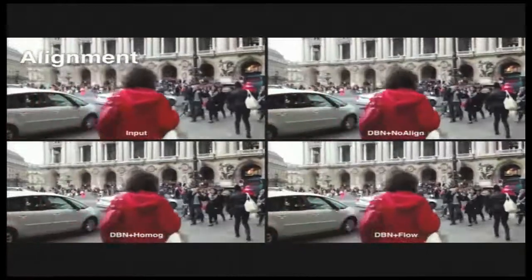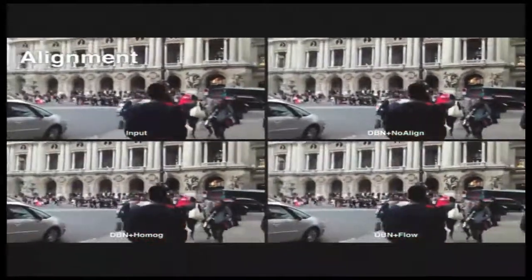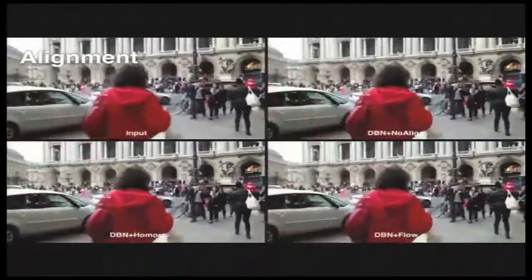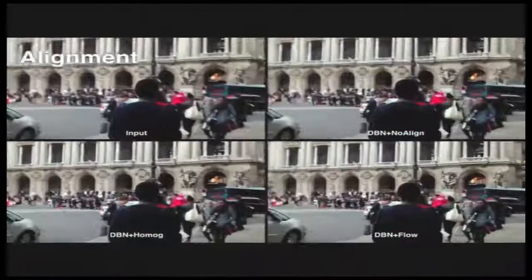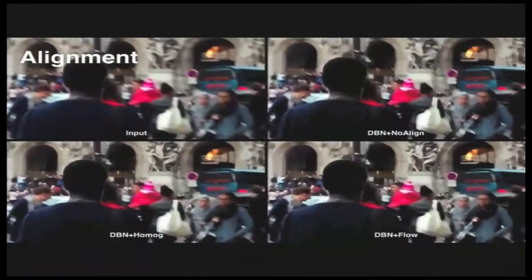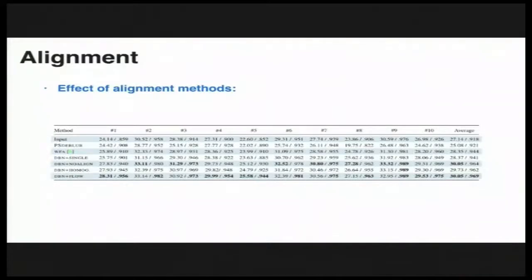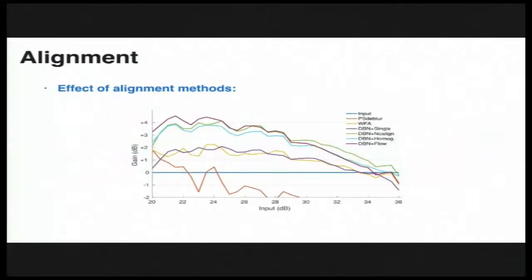In addition, we conducted a number of experiments evaluating the effect of alignment with varying input blurriness. Extensive evaluation shows that our method relaxes the need for explicit frame registration. Quantitative results also reveal the fact that different alignment methods should be used depending on the input sharpness. We believe that similar strategies could be applied to other aggregation-based applications as well.